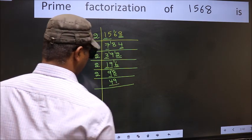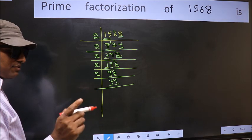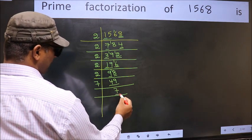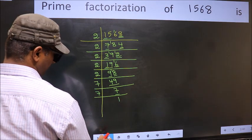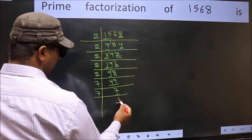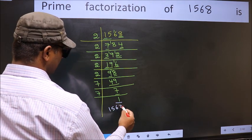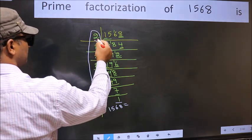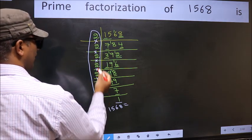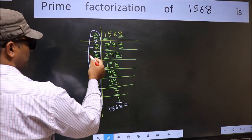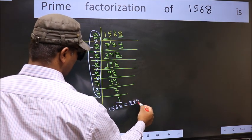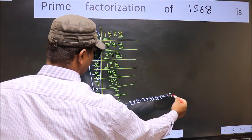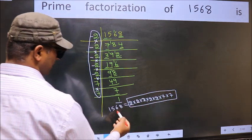Now here we have 49. Always remember 7×7=49, that is 7 times 7 is 49. Now we have 7. 7 is a prime number, so 7×1=7. So we got 1 here. So the prime factorization of 1568 is the product of these numbers. How many times did we get 2? 1, 2, 3, 4, 5 — so 2×2×2×2×2×7×7. This is the prime factorization of 1568.